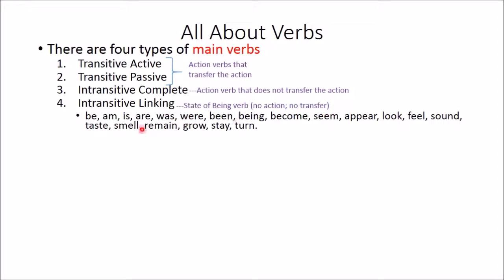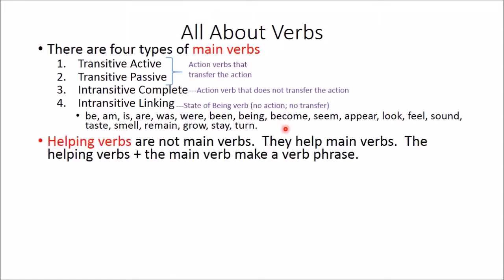The intransitive linking verbs are: be, am, is, are, was, were, been, being, become, seem, appear, look, feel, sound, taste, smell, remain, grow, stay, and turn. These intransitive linking verbs should be memorized.